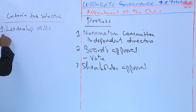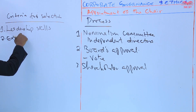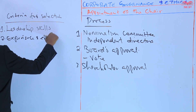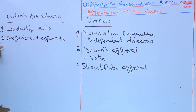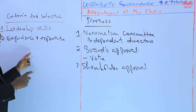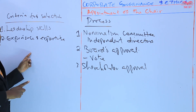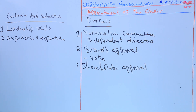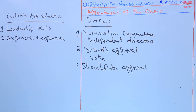Two: experience and expertise. The chair should have relevant experience in the company's industry and related fields, as well as a deep understanding of corporate governance principles. That is what the nomination committee should consider when identifying the chair of the board.